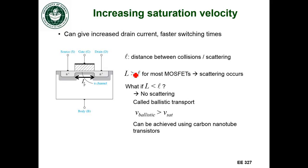For most MOSFETs, the length of the channel is longer than that collision distance, so the electron is going to hit something before it can move between the source and the drain. But if we made this length between the source and the drain really short so that it was less than this distance between collisions, then we wouldn't get any scattering.